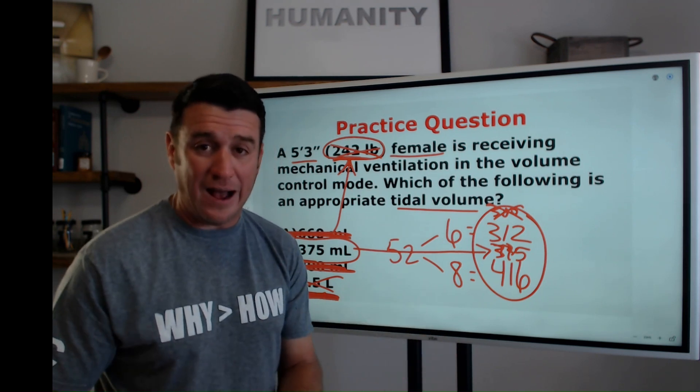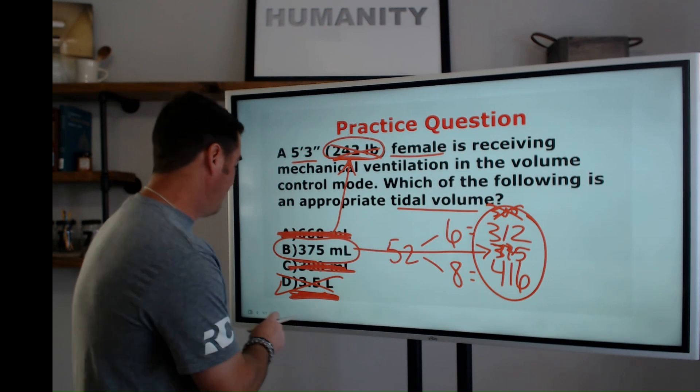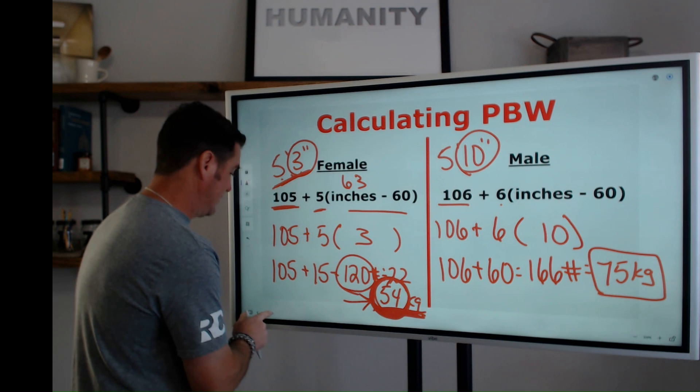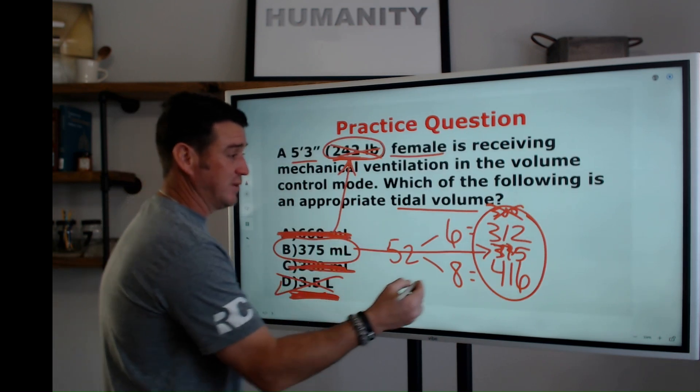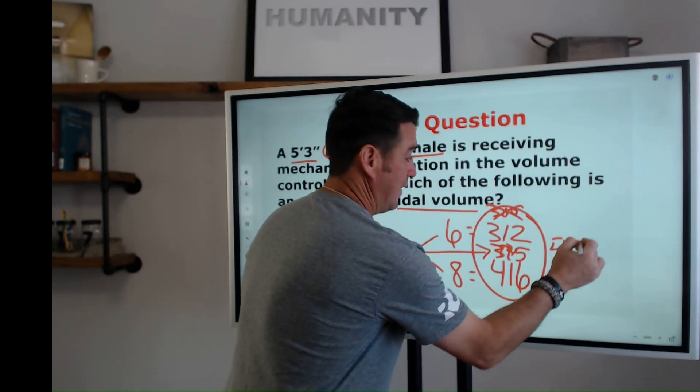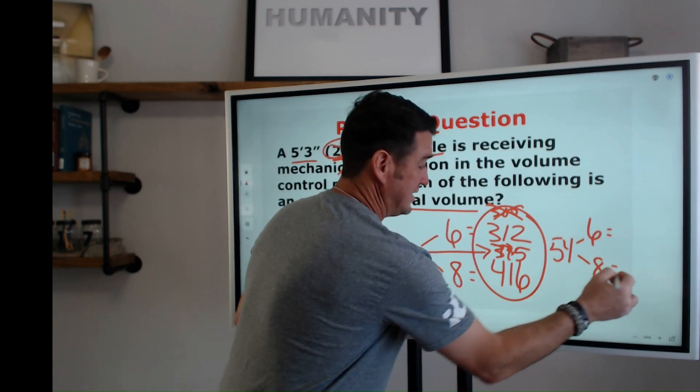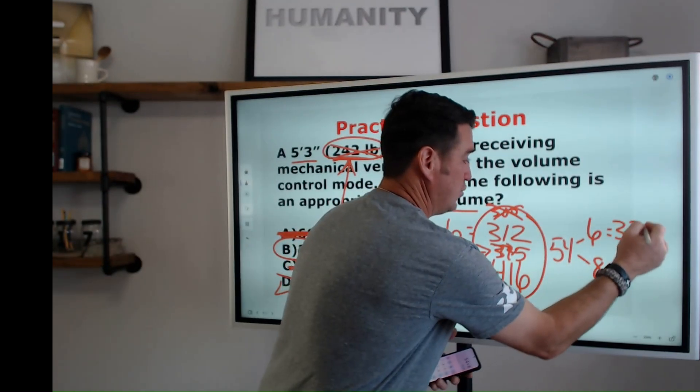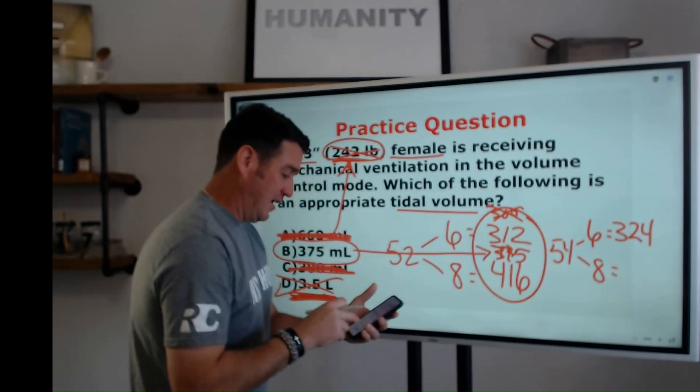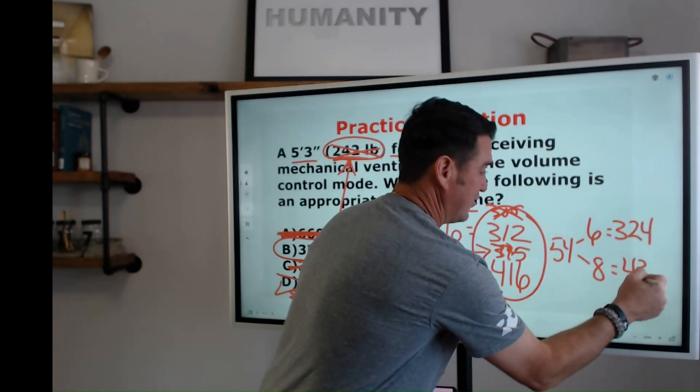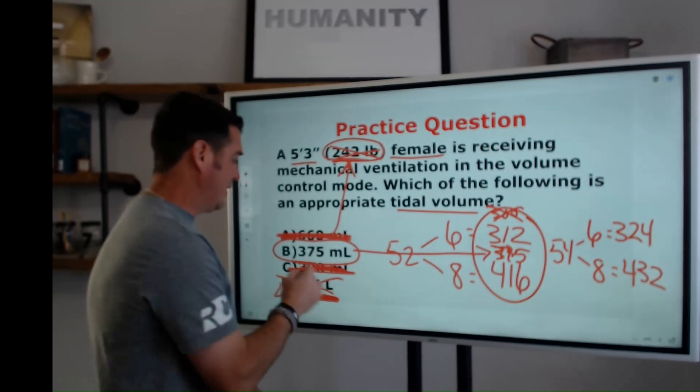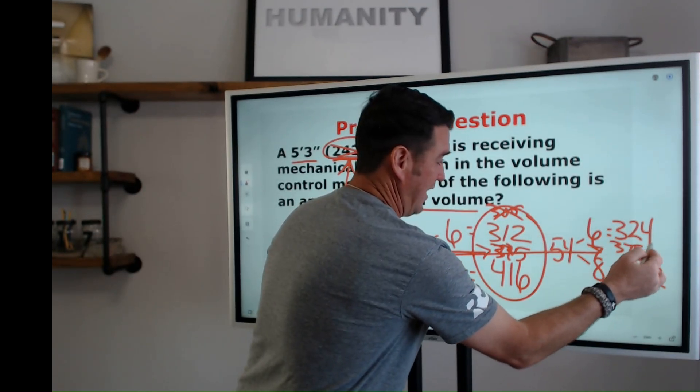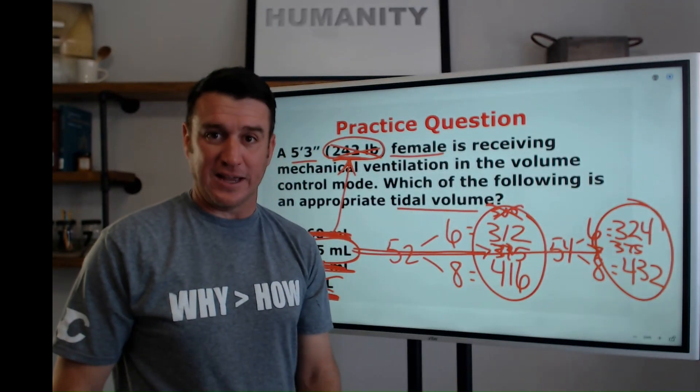Now, to show you that the pounds formula will also get you to the correct answer, let's go back and look at the pounds formula. Remember, we came up with 54 kilograms when we used the pounds formula. So now we do 54 times 6, 54 times 8. What does that give us? 54 times 6 is 324. And 54 times 8 is 432. Guess what? 375 still falls right in the middle of that value. And you still get the correct answer.